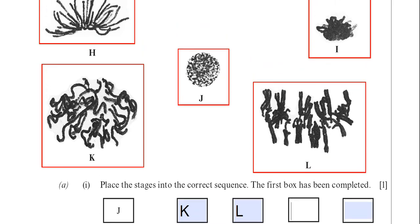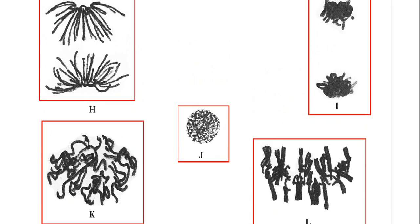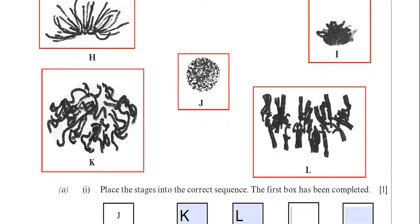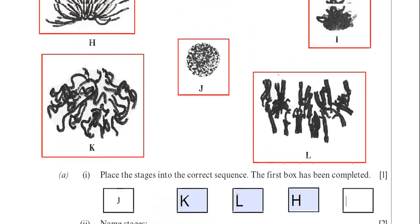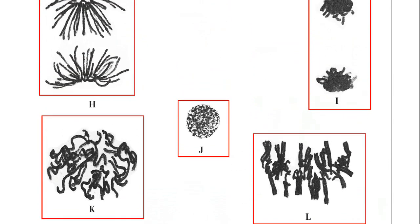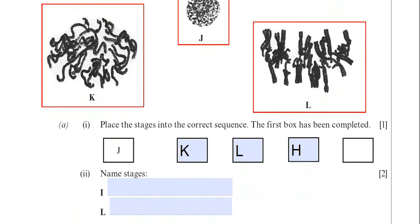If I just scroll up again, you can see now image H is anaphase. That's showing the chromatids separating. So that would be H. And the last stage is telophase. And if we just quickly scroll up again, that would be I, where you have the two nuclei formed after the cell is divided. So the last one would be I.